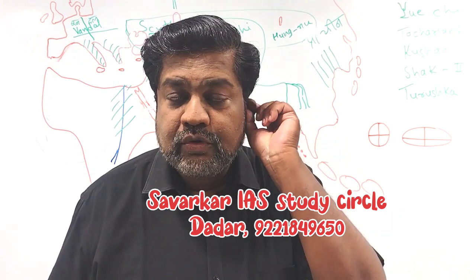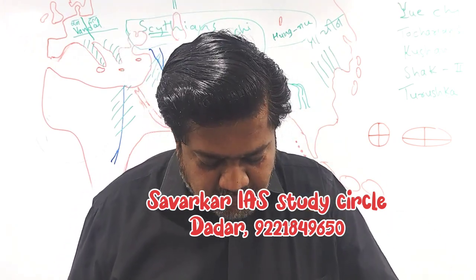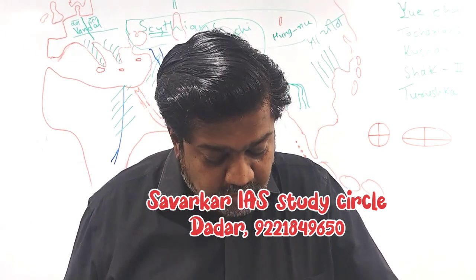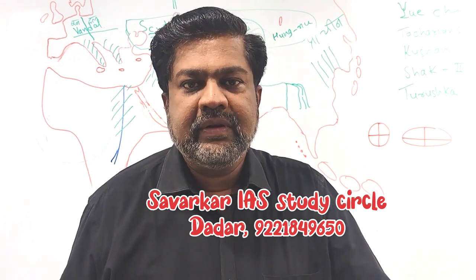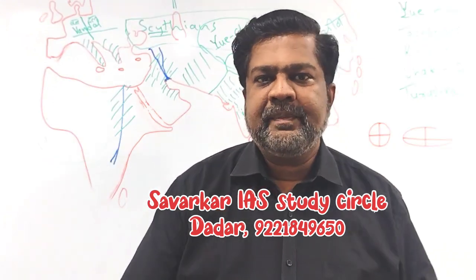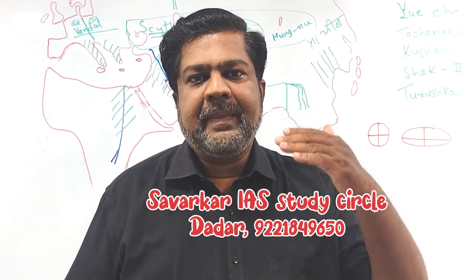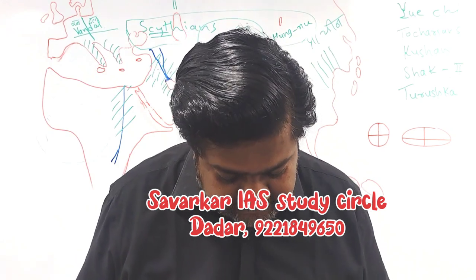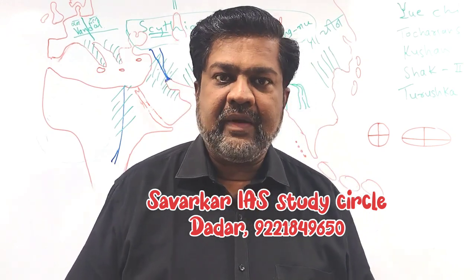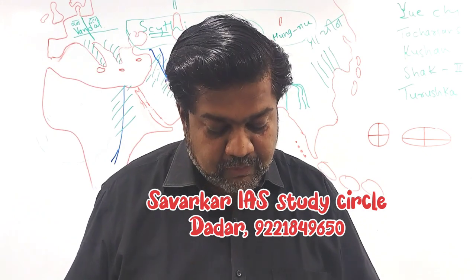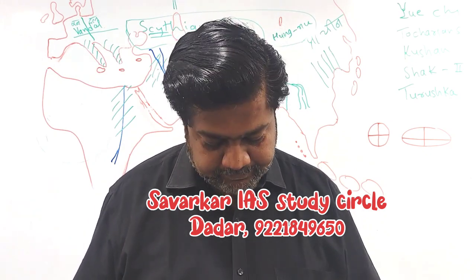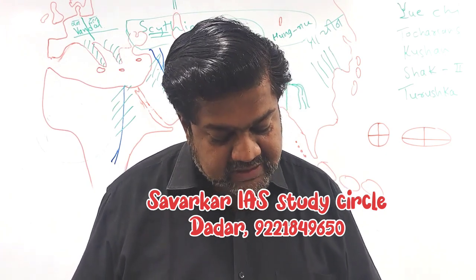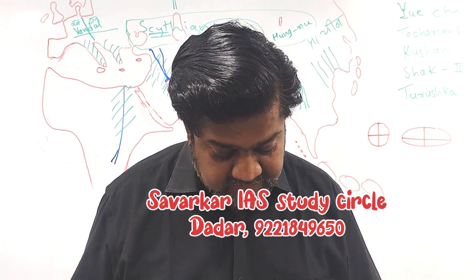Question eight: consider the following statements. Temporal bone is part of the human skull — yes, as we discussed, temporal bone is part of the cranium, and cranium is part of the skull, so this is true. Frontal bone is part of the cranium — yes, we discussed this as well. Both statements are true, so the answer is option C.